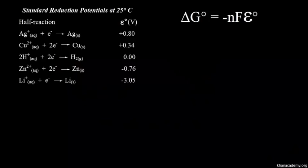When you are working with standard reduction potentials, it's important to realize that voltage is an intensive property. By the end of the video, you'll understand what I mean by the word intensive. We're going to use this first half reaction as an example — the reduction of silver ion to silver metal. We have Ag⁺ plus an electron gives us solid silver. The standard reduction potential is positive 0.80 volts for this half reaction. We're going to start by calculating the standard change in free energy.